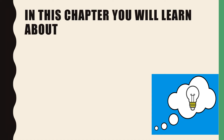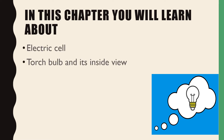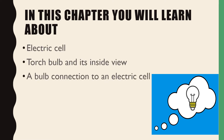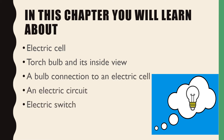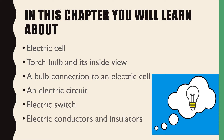In this chapter you will learn about electric cell, torch bulb and its inside view, a bulb connection to an electric cell, an electric circuit, electric switch, and electric conductors and insulators.